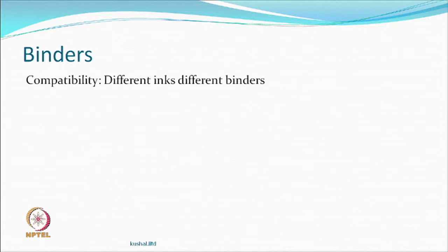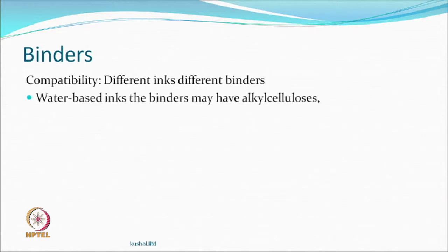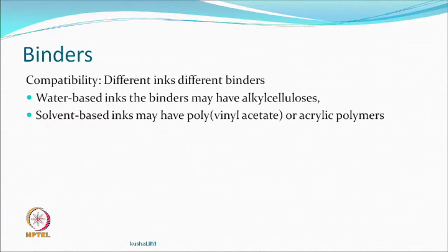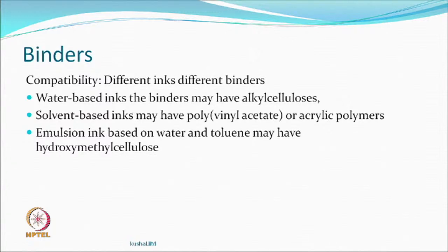Different inks use different binders — water soluble, water insoluble, and all other types must be considered for compatibility. Water-based inks may use alkyl celluloses. Solvent-based inks may use vinyl acetate-based or acrylic-based polymer binders. Emulsion inks using water-toluene mixtures may use another binder such as hydroxymethyl cellulose — something compatible with both components — because incompatibility leads to precipitation, whereas what you need is a nicely dispersed, free-flowing ink.